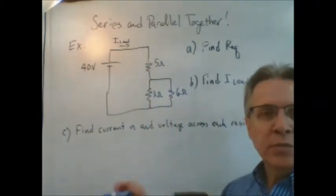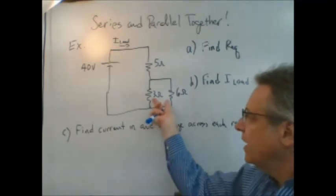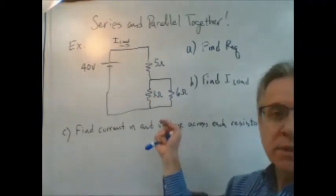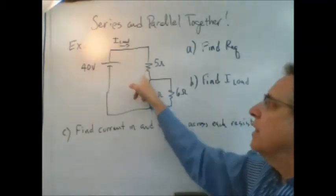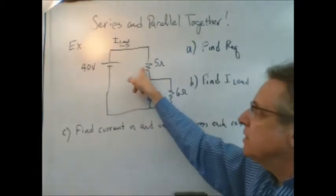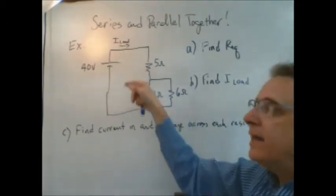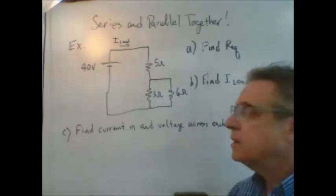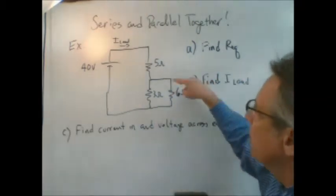So how you're going to approach this is you can combine these two resistances, which are in parallel, into one resistor. And then that resistor will be in series with this resistor, and that would just be adding them up, and we could easily get the equivalent resistance.